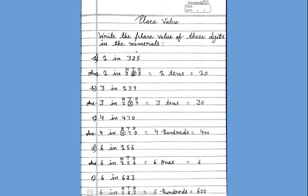And write heading place value. Then leave line and write the place value of these digits in the numerals. Now, leave line and start from A. 2 in 325. And leave line and write answer 2 in 325. And write the place value.